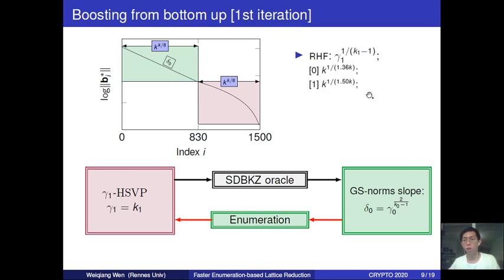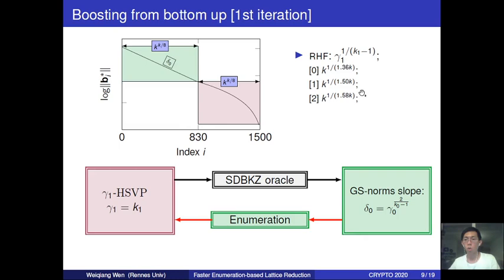As you can see, the root Hermit factor is getting smaller. With this new approximate Hermit SVP solver reaching a smaller root Hermit factor, we feed it to the SDBKZ oracle, which helps to reduce a basis of even larger dimension. The Gram-Schmidt log norms show a new segment of line with an even smaller slope, and this even smaller slope introduces an even smaller root Hermit factor. Repeating this process sufficiently many times, we eventually approach our target root Hermit factor. This is our general idea in more detail.